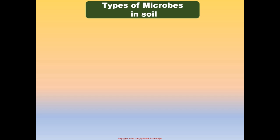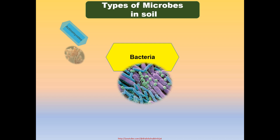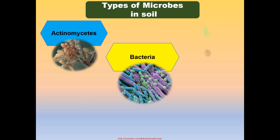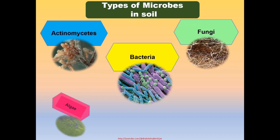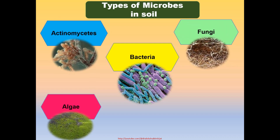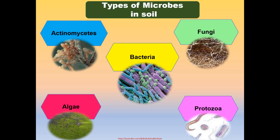Several types of living organisms are found in soil. However, there are 5 major groups of microbes commonly found in soil: bacteria, actinomycetes, fungi, algae, and protozoa.